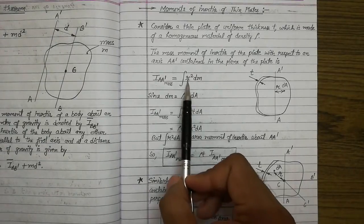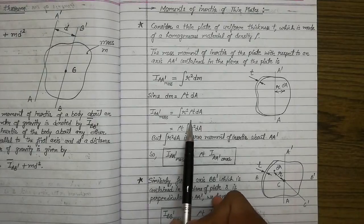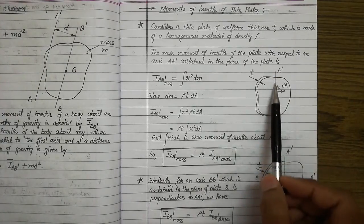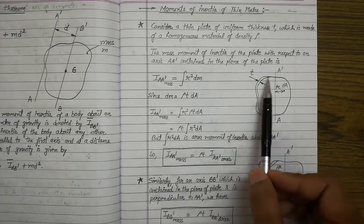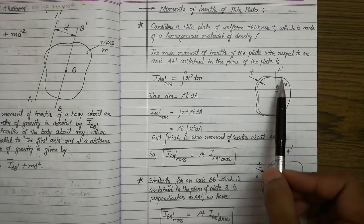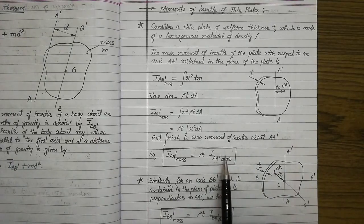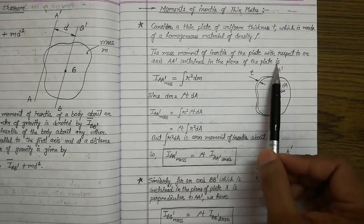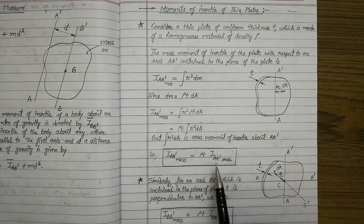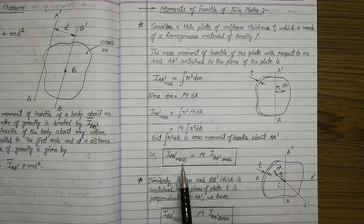Now, the term integration of r² dA is the area moment of inertia. Notice that r² dm is the mass moment of inertia, and if we replace dm by dA we get the area moment of inertia. So the mass moment of inertia of this thin plate about axis AA' is equal to rho times t times the area moment of inertia of this plate about that same axis.